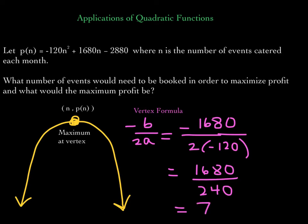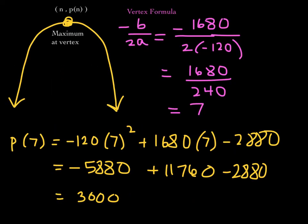We just found the first coordinate of the vertex, which is n — the number of events that need to be booked in order to maximize the profit. Now, for the profit, all we need to do is take 7 and plug it into the function: P of 7. After some arithmetic, that comes out to 3,000. So the answer is 7 events would need to be booked in order to maximize the profit, which would be $3,000.